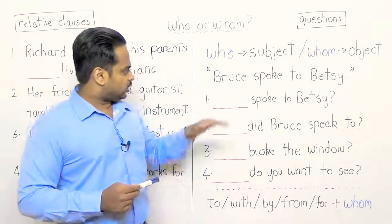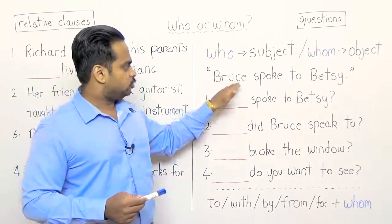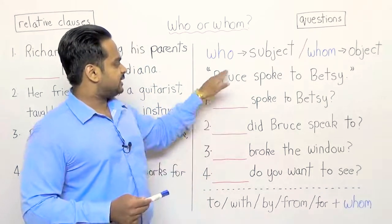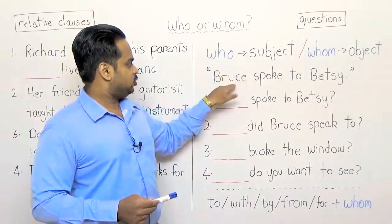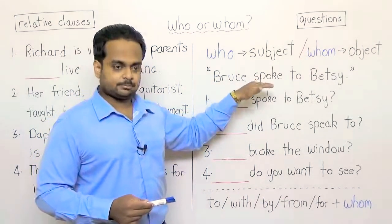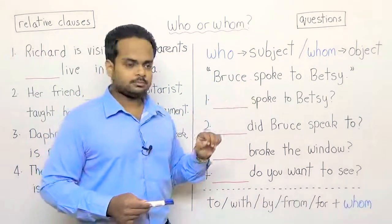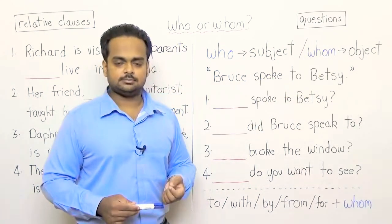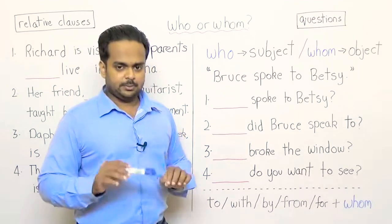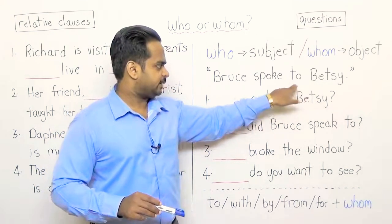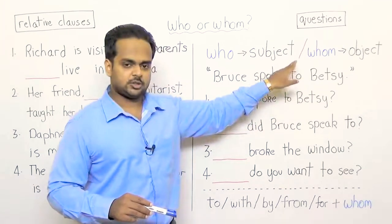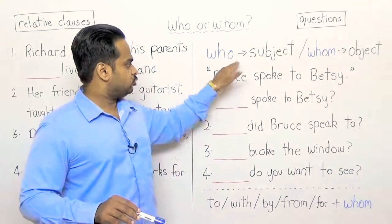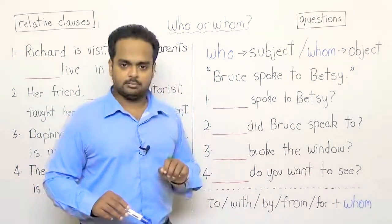What do I mean by that? Well take a look at this sentence: Bruce spoke to Betsy. In this sentence, Bruce is the subject because Bruce does the action — speak, past tense, spoke. And Betsy is the object because Betsy receives the action. For the purpose of this sentence we'll say that Bruce is the subject and Betsy is the object.